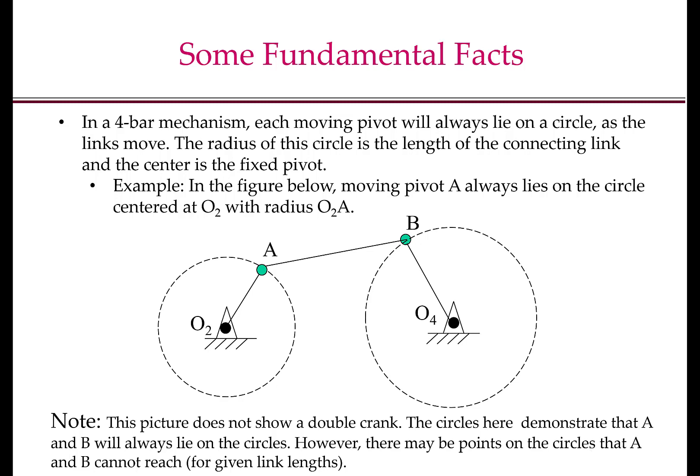In a four-bar mechanism, each moving pivot will always lie on a circle as the links move. For example, in the figure shown here, the moving pivot A always lies on a circle with its center at O2. The moving pivot B moves on the circle with center at O4. This geometric fact will be crucial in our development of synthesis procedures.